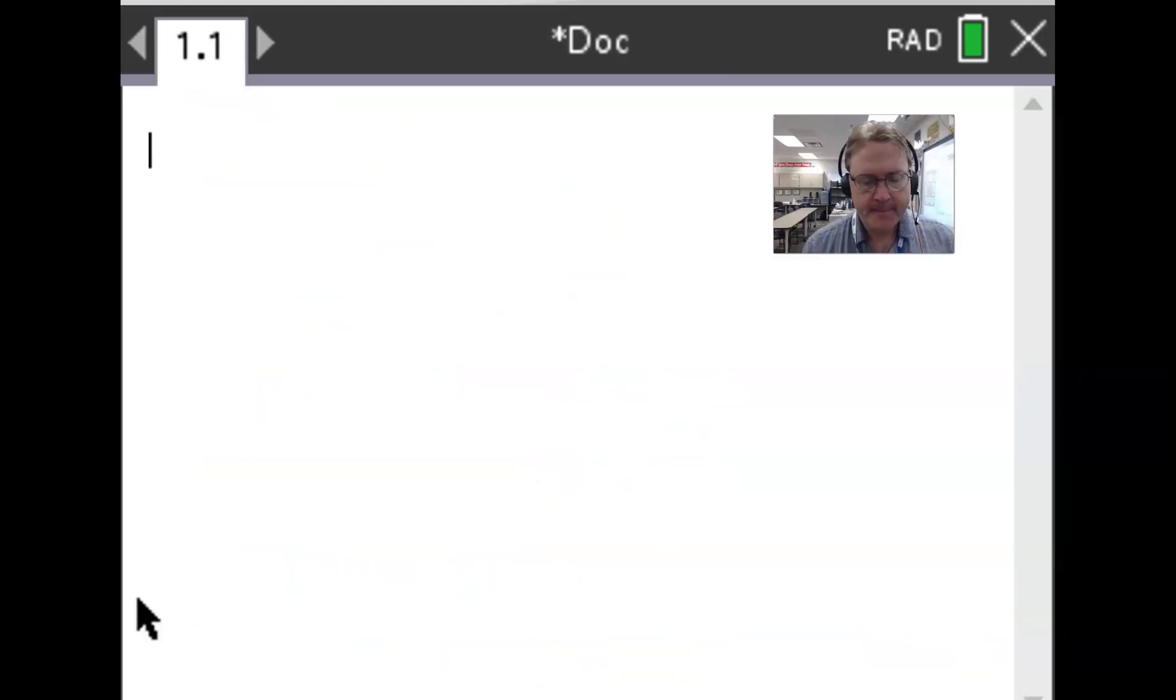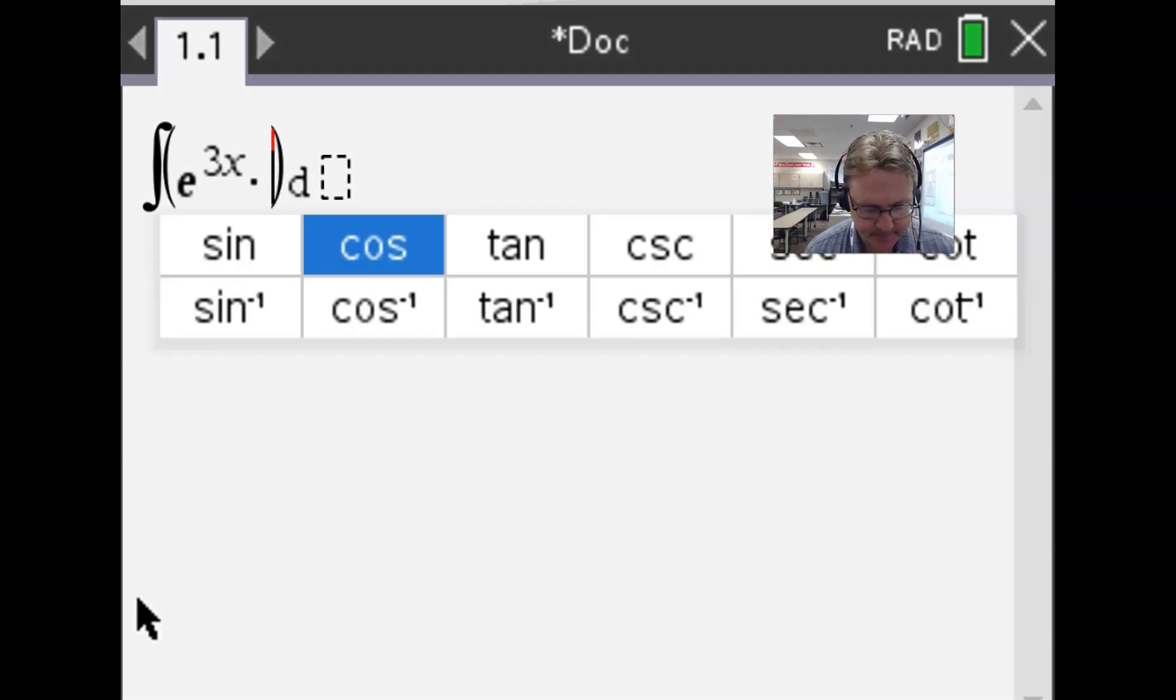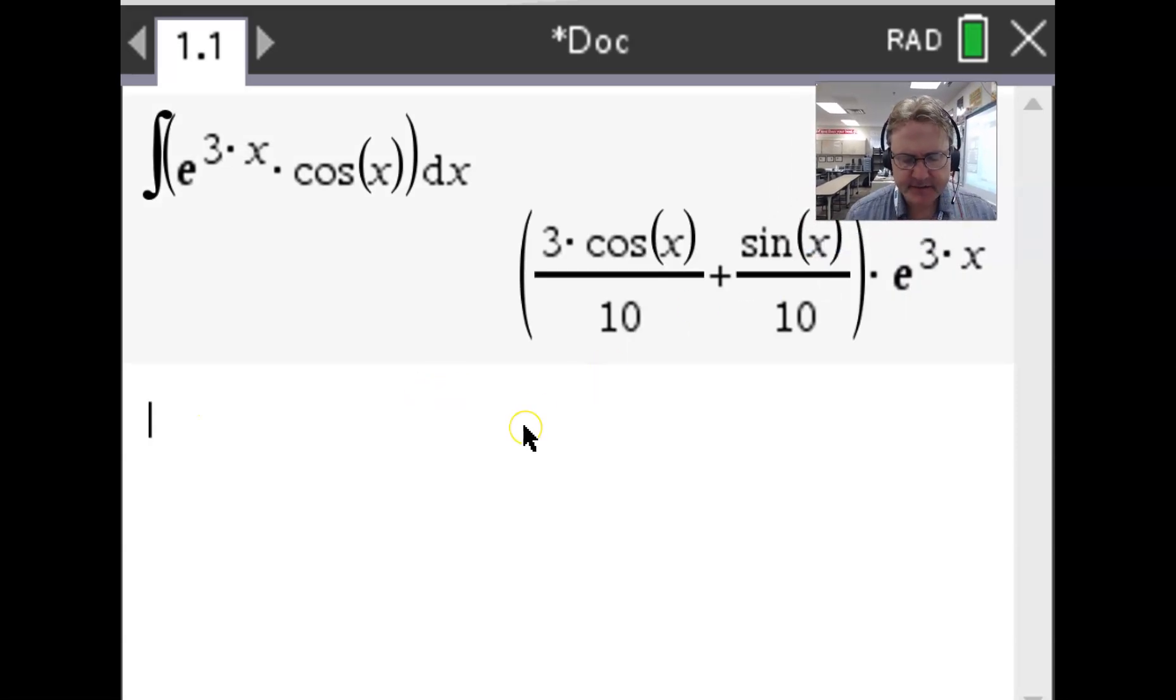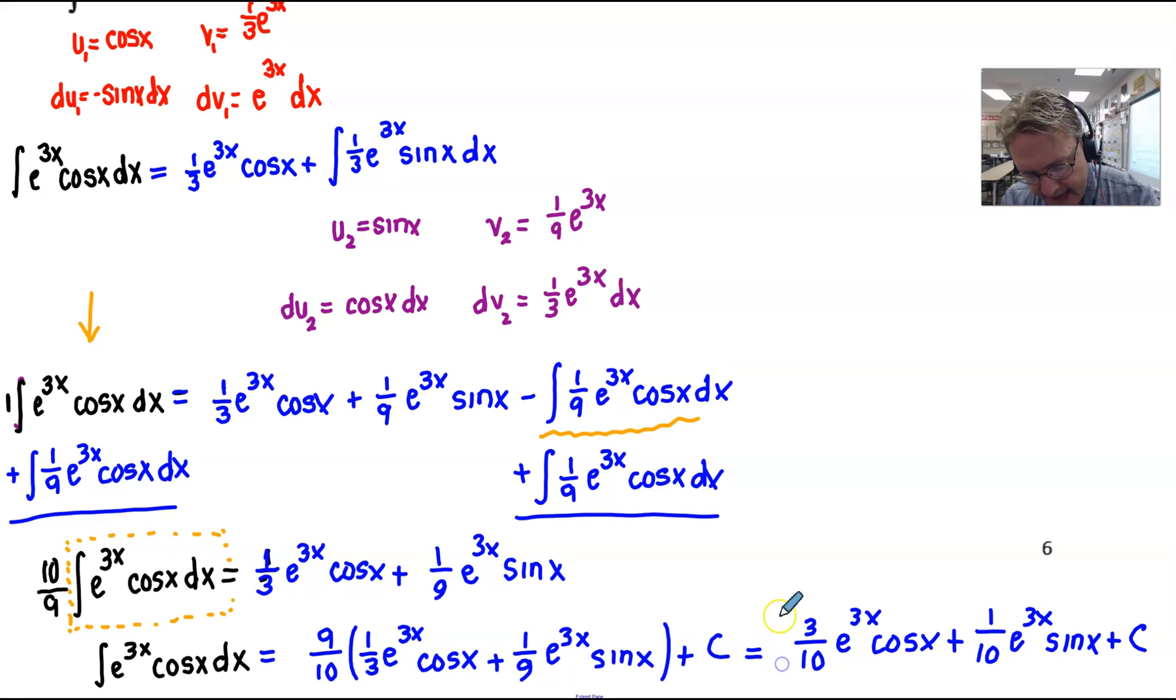So here we are with our trusty TI-Inspire calculator. We're going to go ahead and set this up with the integration, and we were integrating e to the 3x, I believe it was, multiplied by the cosine with respect to x. The results I get, if I can move my camera picture out of the way, is a little bit different than what we had in terms of our pencil paperwork. It looks like they've just factored out only the e to the 3x and wrote it after the fact, but we have to realize that there is a three-tenths coefficient in front of the cosine, a one-tenth coefficient in front of the sine. If we compare that with our pencil paperwork, we should be okay, and as you can see, we certainly have that three-tenths coefficient alongside our cosine and the one-tenth alongside the sine.